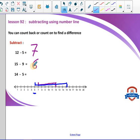14 minus 5. We start with 14 and we count back 5. 1, 2, 3, 4, 5. So 14 minus 5 will be 9.